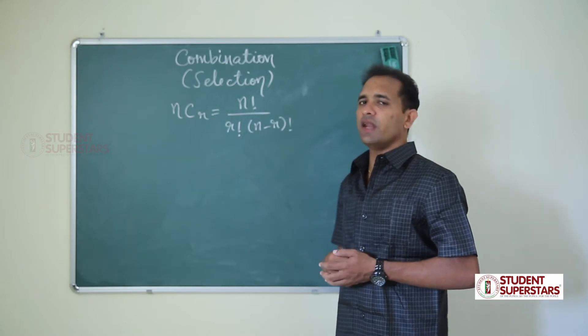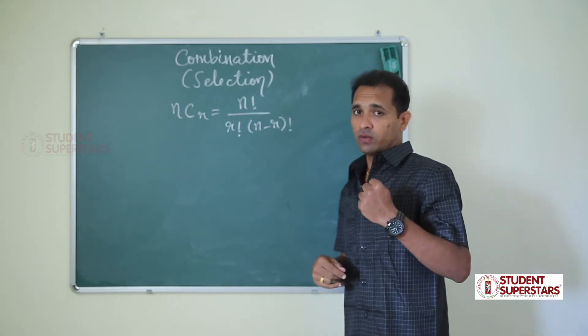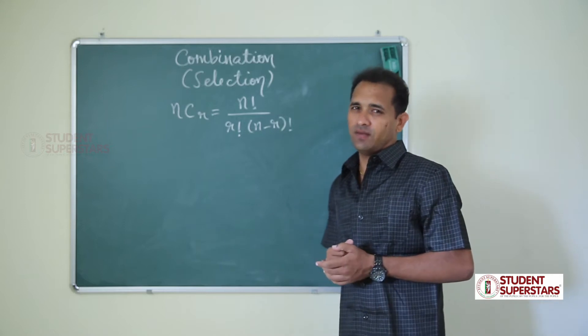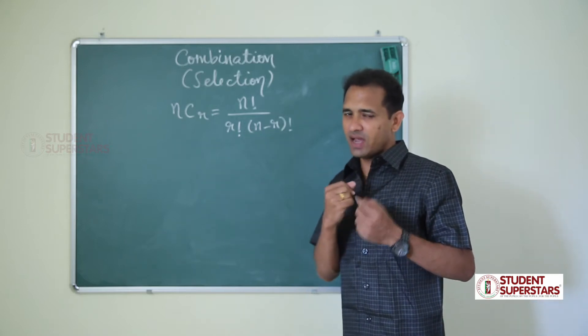Selection means, for example, if there are 3 people, we have to select 2. How many ways can we select? A, B, C. We can select A,B; B,C; or A,C.